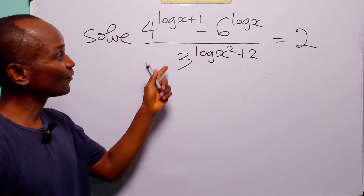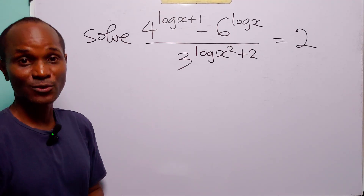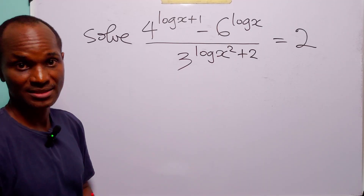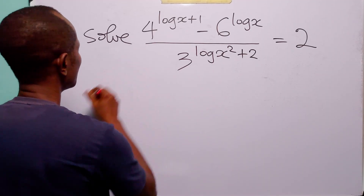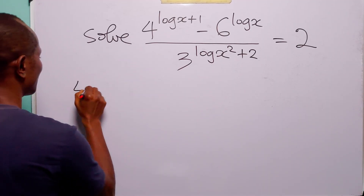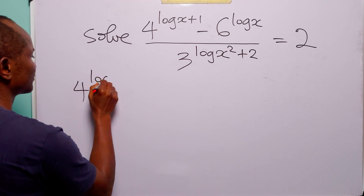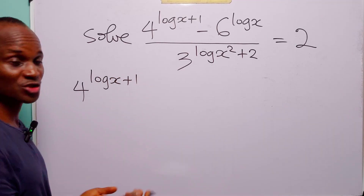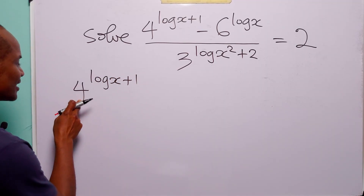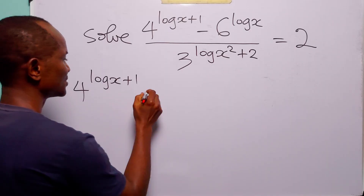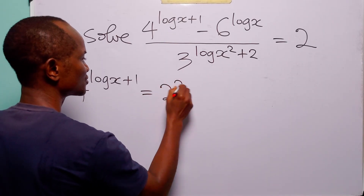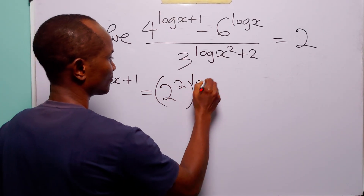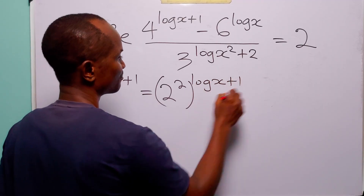Hello and welcome. To solve this logarithmic equation we are going to start by simplifying the terms. We have 4 to the power log x plus 1, and since we can write 4 as 2 squared, this is equal to 2 squared to the power log x plus 1.